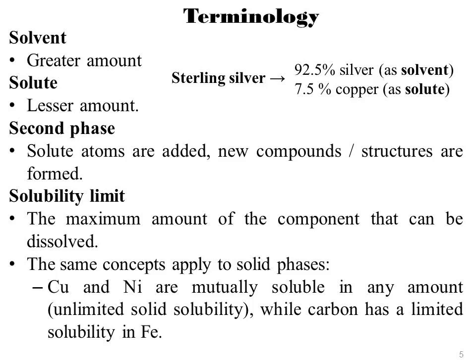Copper and nickel are mutually soluble in any amount — unlimited solid solubility — while carbon has a limited solubility in iron. Whether the addition of impurities results in formation of a solid solution or second phase depends upon the nature of the impurities, their concentration, temperature, and pressure.